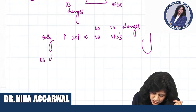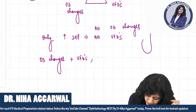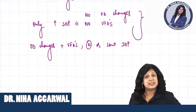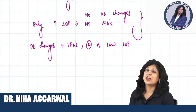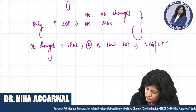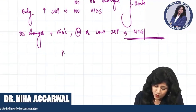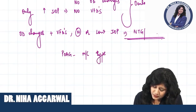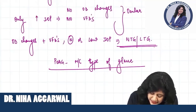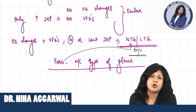Another scenario: if we have optic disc changes plus visual field defects but the IOP is normal or low, this is called normal tension glaucoma or low tension glaucoma. POAG is actually the most common type of glaucoma, and about 16% of people are manifesting in the form of normal tension glaucoma.